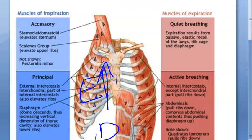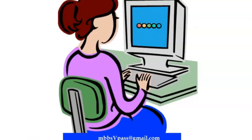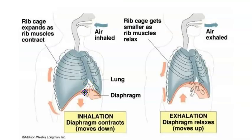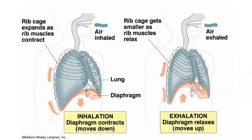The external intercostals lift your ribs up. Only two muscles to remember for normal inspiration: external intercostals and your diaphragm. The intercostals pull your ribs up, and the diaphragm goes down — the dome-shaped diaphragm becomes flat. So in inspiration, the ribs go up and the diaphragm comes down, instead of its usual dome shape it becomes flat.